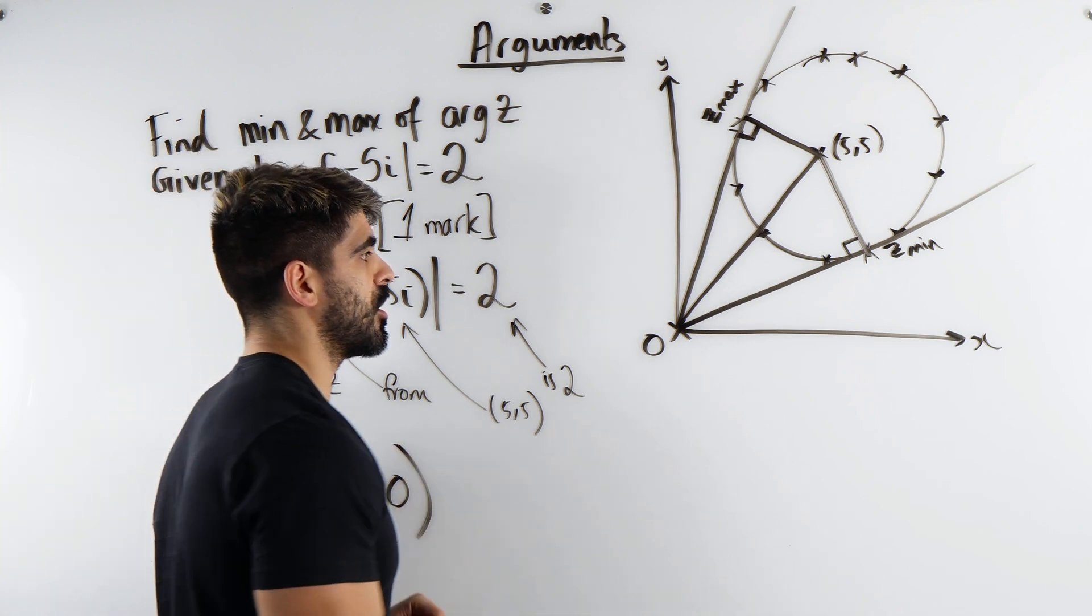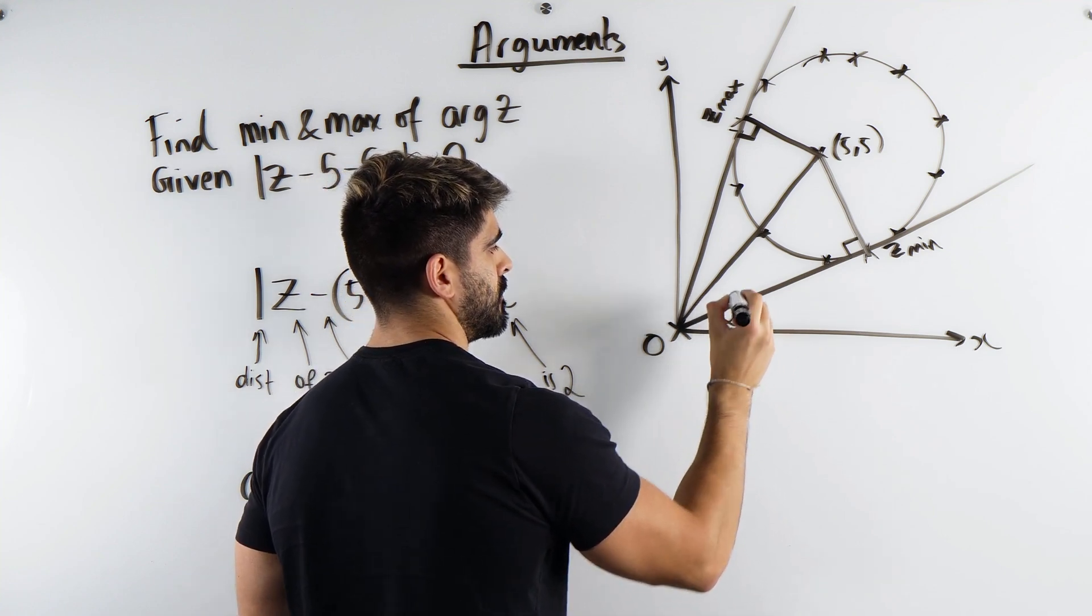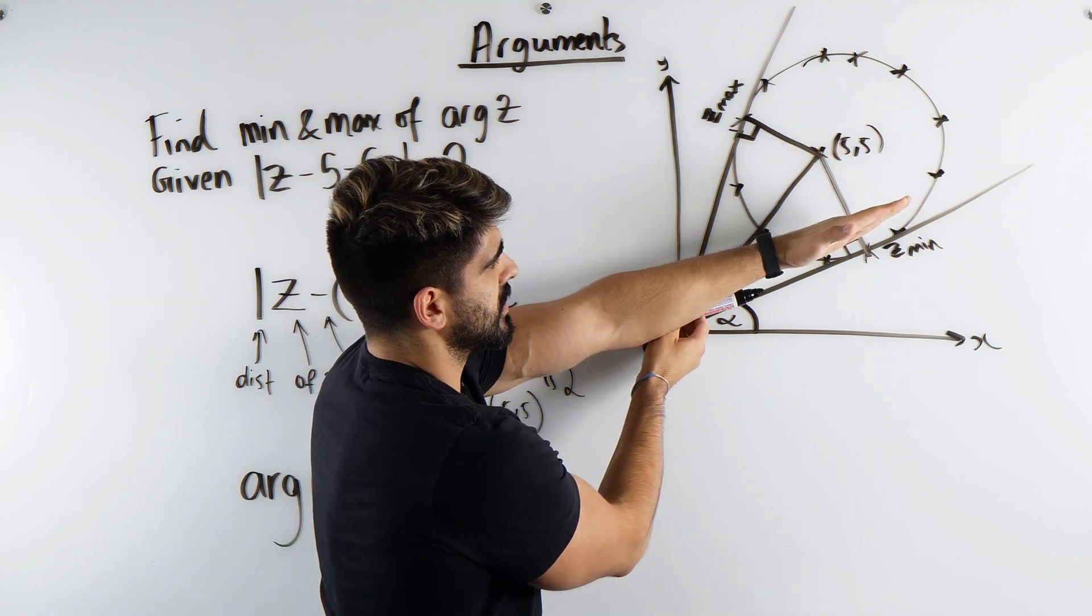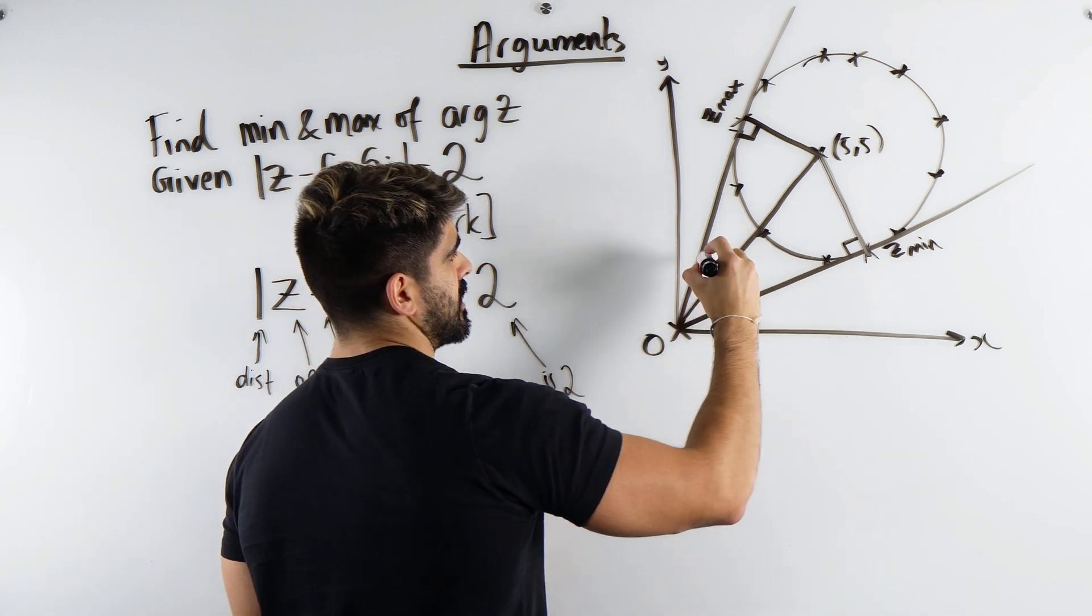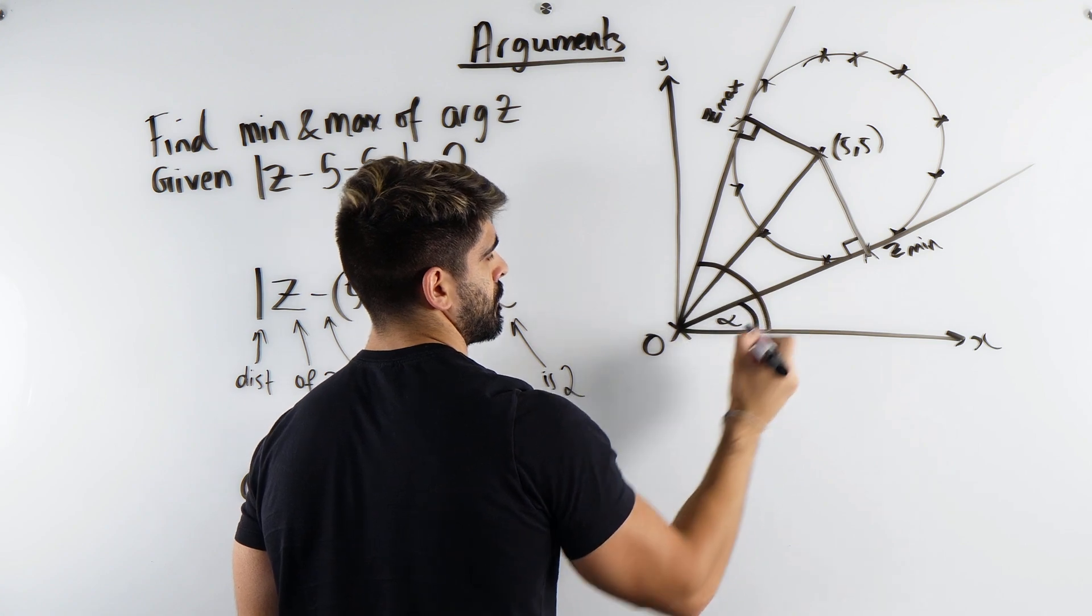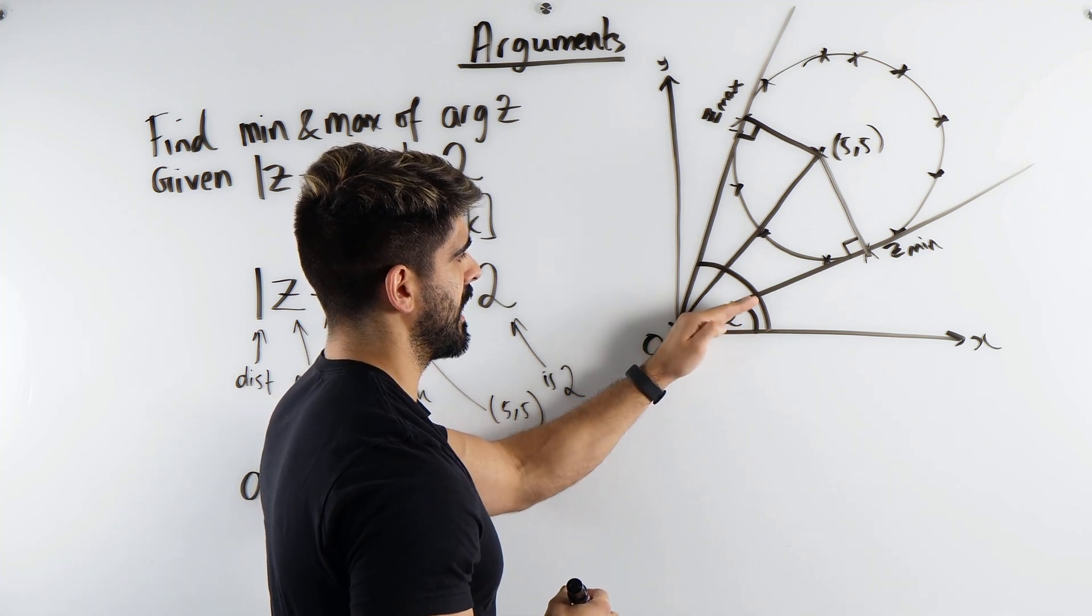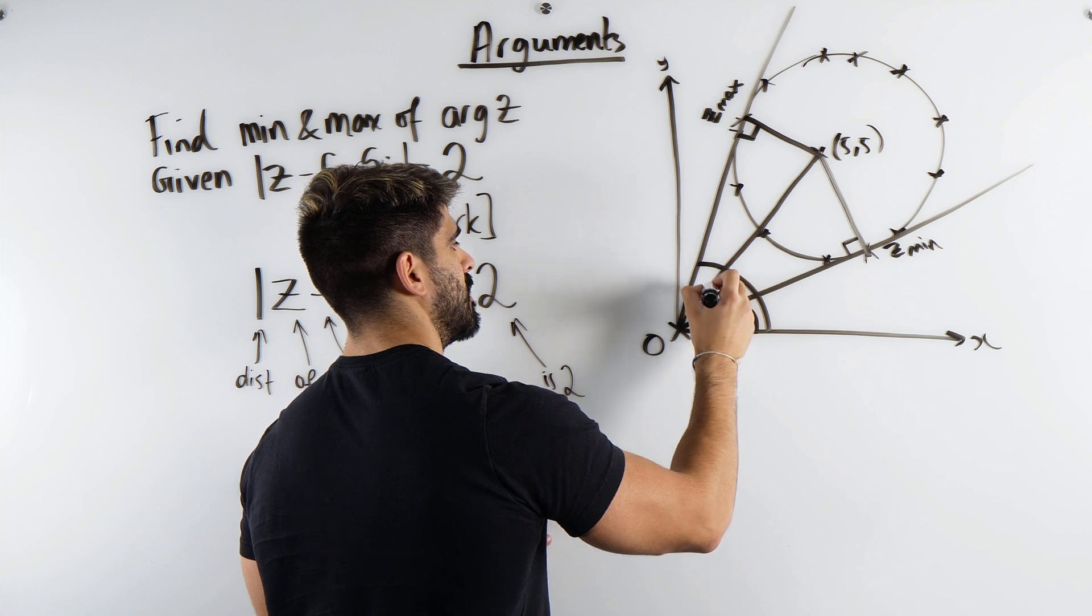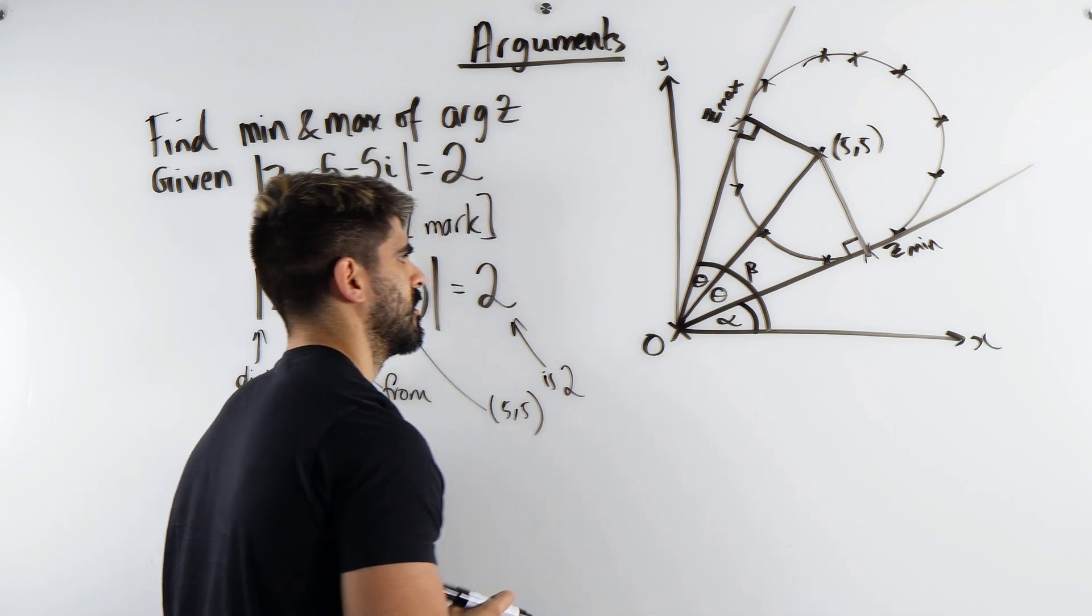The minimum arg is going to be this angle. Let's call it alpha. Remember when I did this thing, that is the smallest angle to the x-axis. The maximum is going to be this whole thing here. That maximum is just alpha plus these two angles which are the exact same. I'll call it theta and I'll now call this big angle beta.